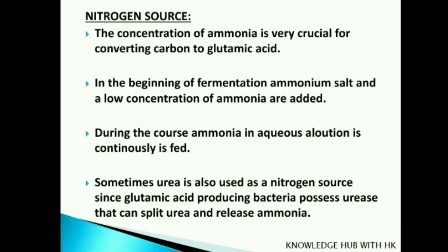For the nitrogen source, the concentration of ammonia is very crucial for the conversion of carbon to glutamic acid. At the beginning of fermentation, ammonium salts with low concentrations of ammonia are added. During the course of fermentation, ammonia in the form of aqueous solution is continuously added into the fermenter. Sometimes urea is also used as a nitrogen source, because glutamic acid-producing bacteria possess the urease enzyme that can split urea and release ammonia.